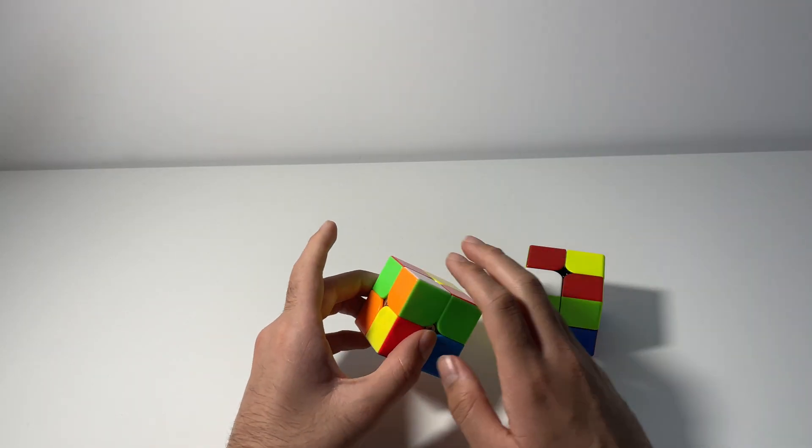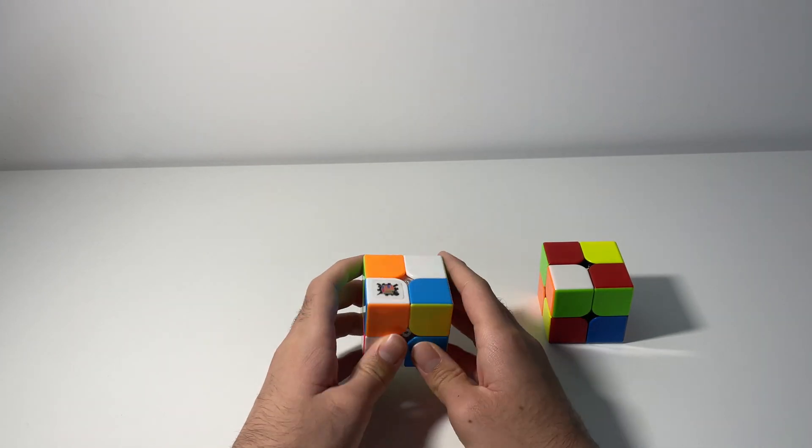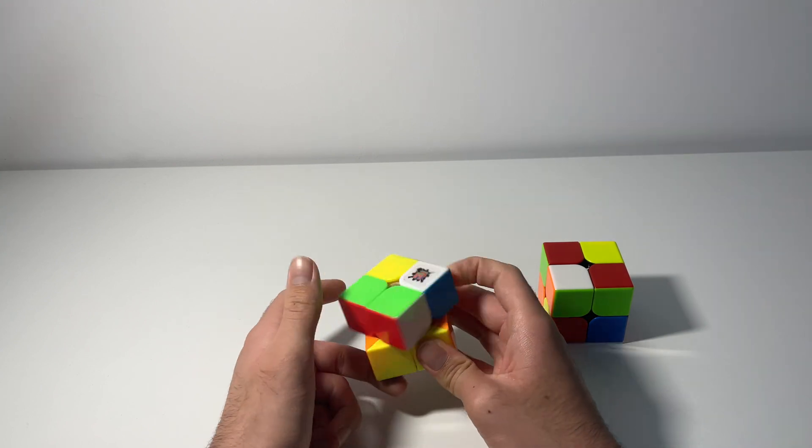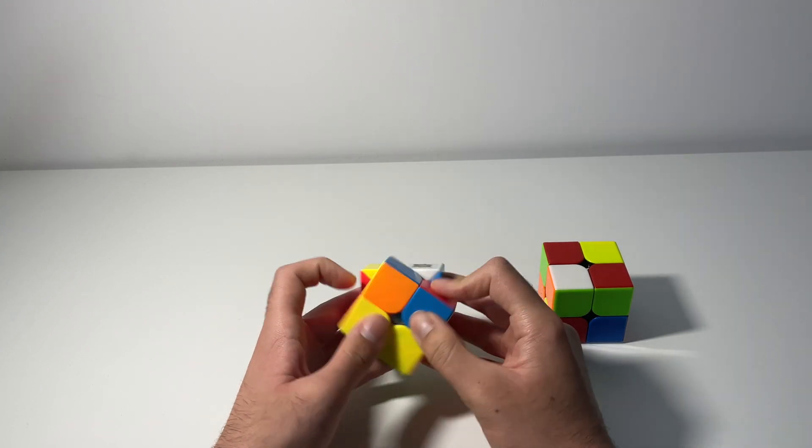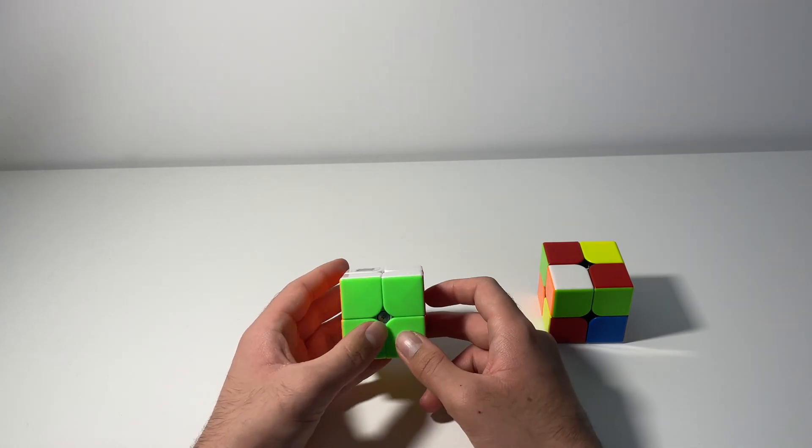For the fifth scramble, what I did was a green CLL layer. So, I solved it, I held it like this, and did a U2 F, and solved it like this, and then just a nice suit case with no AUF. I got a 2.34 on this, which is pretty bad.